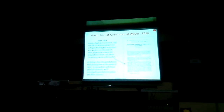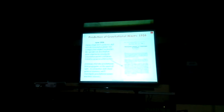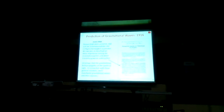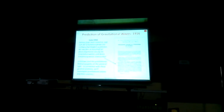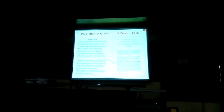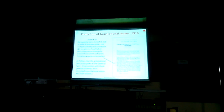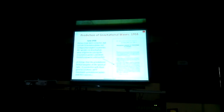Gravitational waves were first described in Einstein's 1916 article, though he got some details wrong, and it took several more publications before he got those details right. Until 1974, gravitational waves were just a theoretical prediction from the Einstein field equations.